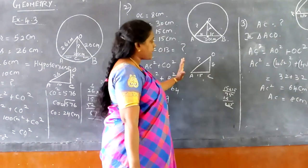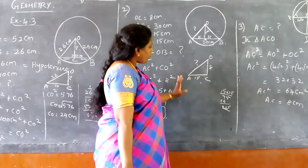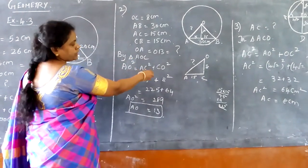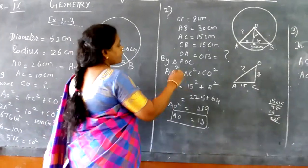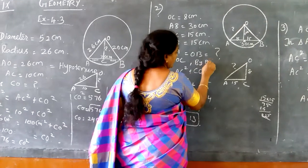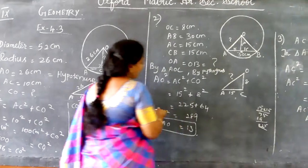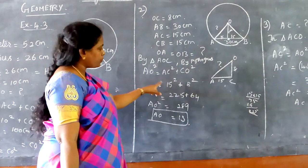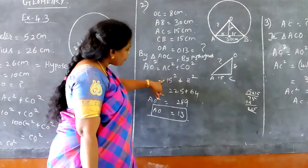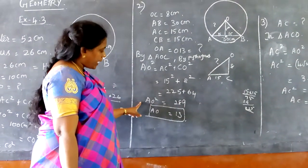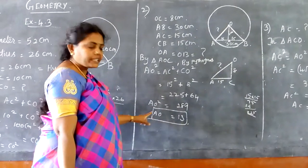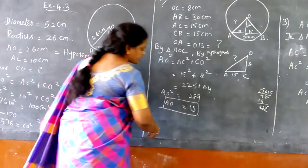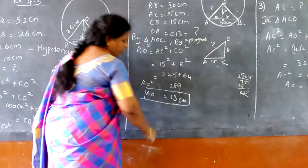Take triangle AOC separately for better understanding. My aim is to find the hypotenuse OA. I know AC = 15 and OC = 8. By Pythagoras theorem for triangle AOC: AO² = AC² + CO² = 15² + 8² = 225 + 64 = 289. So AO = 13 centimetres. That is the answer. Don't forget to write the units as well.